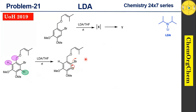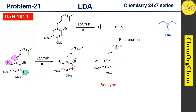Once the carbanion forms, the electrons shift and Br⁻ is kicked off to produce the corresponding benzyne intermediate. This benzyne intermediate will then react with the alkene. Before moving forward, we should note the regiochemistry of this reaction — specifically, how benzyne will react with the alkene, which requires us to examine the electronics of benzyne.